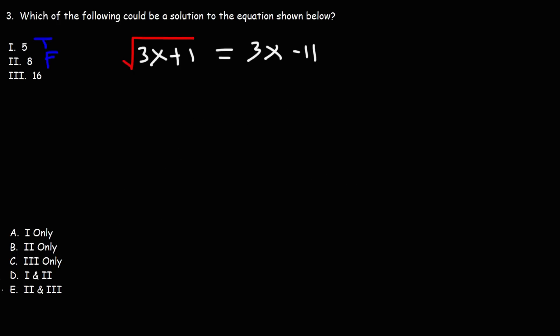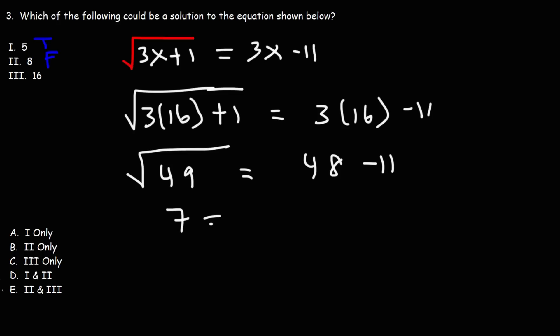Now, let's try the third one. Let's replace x with 16. 3 times 16 is 48 plus 1. That's 49. Here we have 48 minus 11. The square root of 49 is 7. And 48 minus 11 is 37, which does not equal 7. So, the third one is false as well.